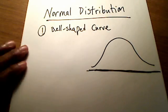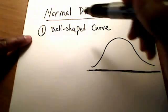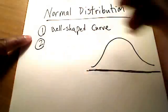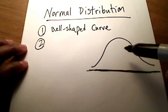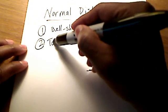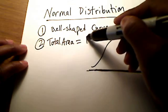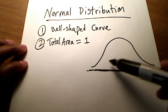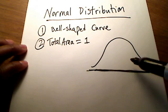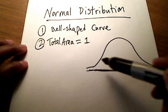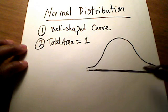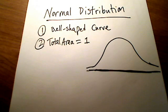The second thing that should come to mind when you hear normal distribution is that the total area under the curve is equal to 1. So all of this area underneath this bell-shaped curve, all of it, including everything out here in the tails as they get smaller and smaller, is a total area of 1.